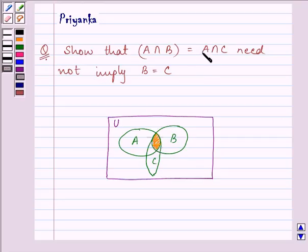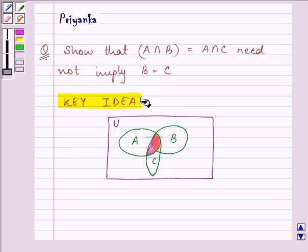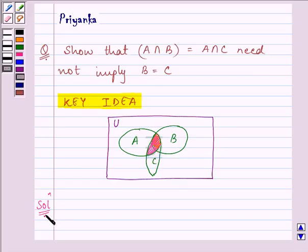Is equal to A intersection C. Now, which is the area representing A intersection C? That is this overlapping figure plus this area. And it says that this need not imply that set B equals set C. That means not all elements of set B are in set C. That is very obvious with the figure I have drawn here. So, understanding the question with the help of this Venn diagram is the key idea that we are going to use in order to proceed with our solution.